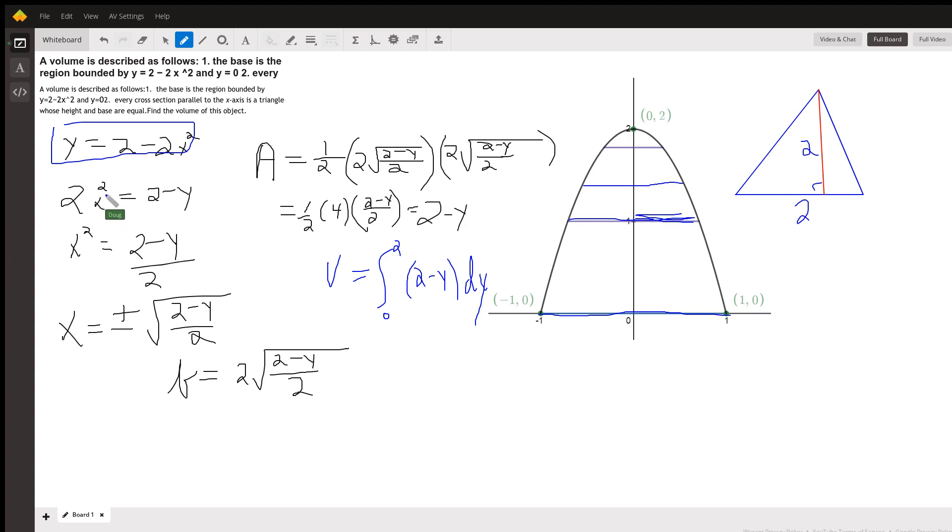I've solved this for x right here. And here's what x equals. It either equals plus or minus the square root of 2 minus y over 2. So we could say that this distance is this x-coordinate, which is square root of 2 minus y over 2 minus a negative square root of 2 minus y over 2.